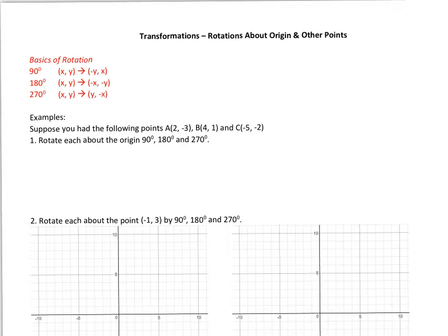So now let's do some of these problems. For this first one, suppose you had the following points: A at (2, -3), B at (4, 1), and C at (-5, -2). Rotate each about the origin 90 degrees, 180, and 270.